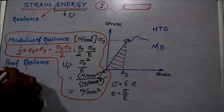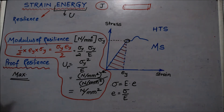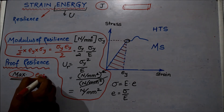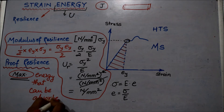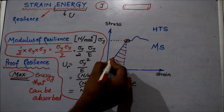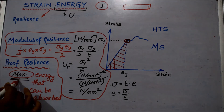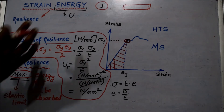The next concept is proof resilience. Proof resilience is the maximum energy that can be absorbed up to the elastic limit without creating a permanent distortion. The key word is maximum. Before the elastic limit, any triangle formed under the curve will not have the maximum area. Maximum area is obtained exactly at the elastic limit point. So proof resilience is the maximum energy that can be absorbed by a material, and it occurs at the elastic limit.